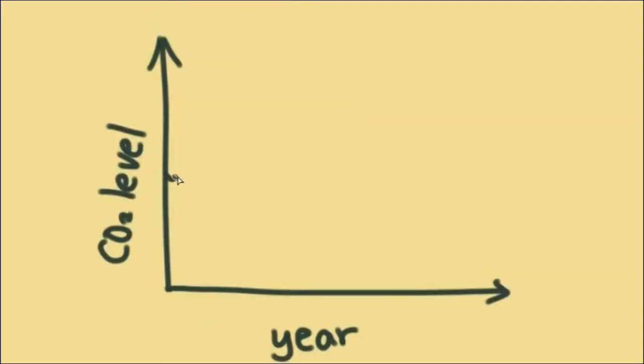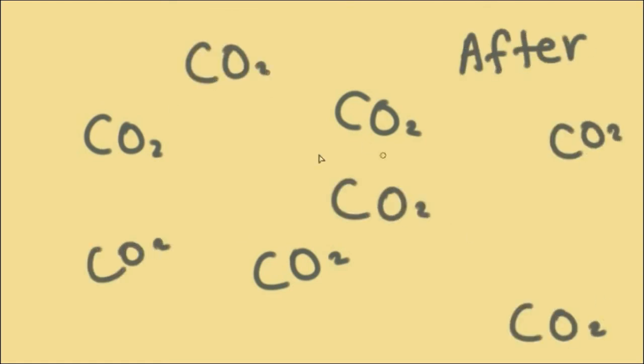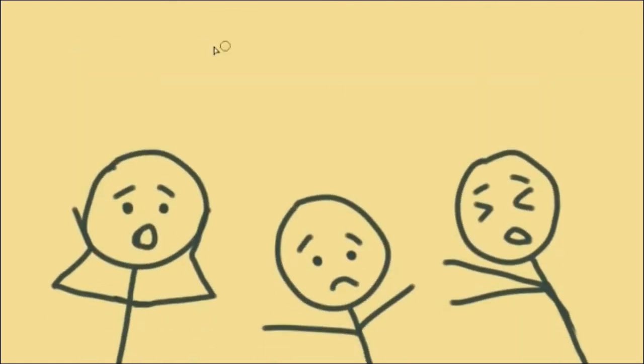What the ice core samples reveal is that carbon dioxide concentrations were very stable over the last 1,000 years, until the beginning of the 1800s, which was the start of the Industrial Revolution. At the moment, CO2 concentrations are 40% higher than they were before the start of the Industrial Revolution. Pretty scary.